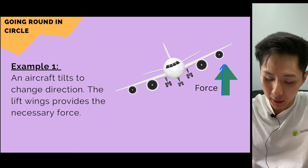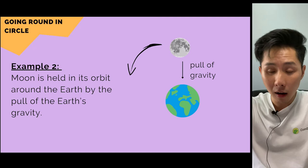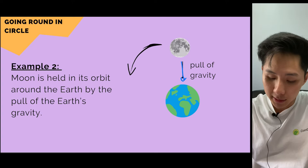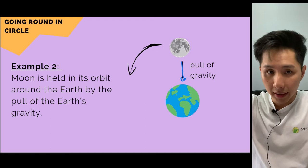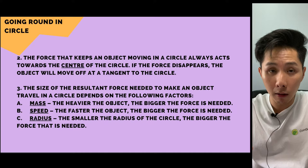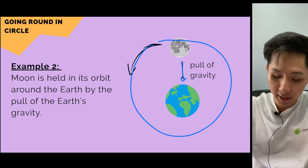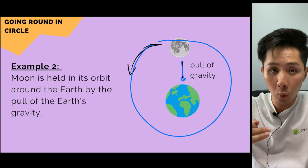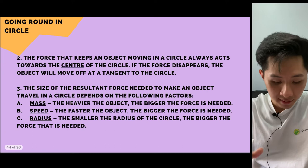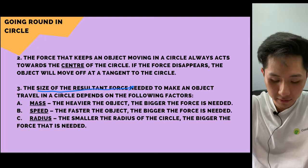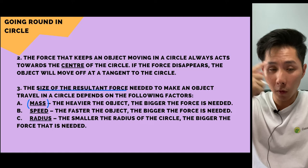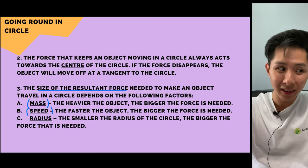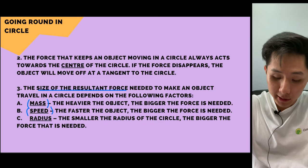A second example: the Moon orbits the Earth due to gravity — an invisible gravitational pull by the Earth moves the Moon in orbit. For an object moving in a circle, the force must be directed towards the centre. The size of the resultant force depends on three factors: mass (heavier objects need more force), speed (faster speed requires more force), and radius (smaller radius requires more force).